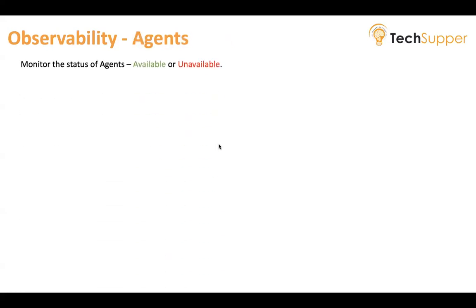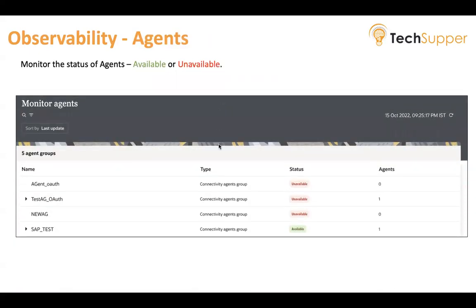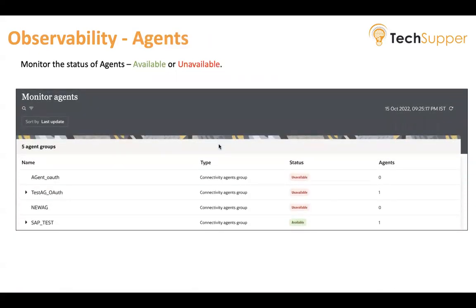The third screen under observability is called Agents. This is used to monitor the status of agents — whether they are available or unavailable. You can look at the health of all your agents across all the agents that you have installed.